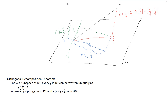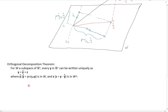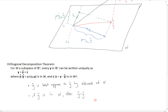From this, we can draw two more observations. First, y-hat is the best approximation to y by elements of W — it is the closest we can get to y while staying in the subspace W. Second, if y itself is in W, then y-hat equals y exactly. This is what we saw previously: when y is in the subspace spanned by the basis vectors, projecting gives back y exactly. If y is not in the subspace, we can only approximate it with y-hat.